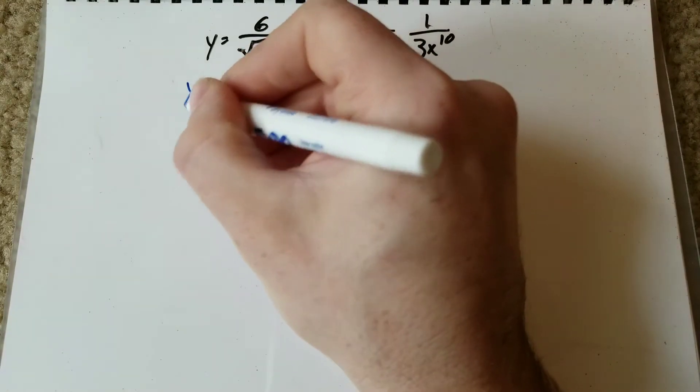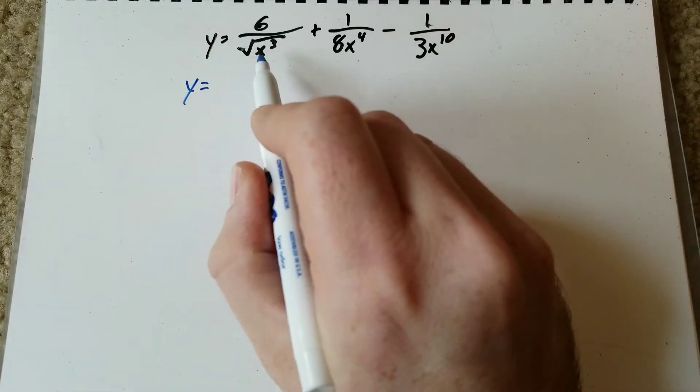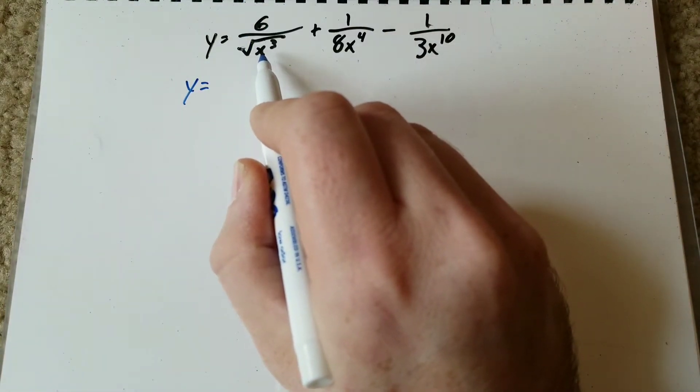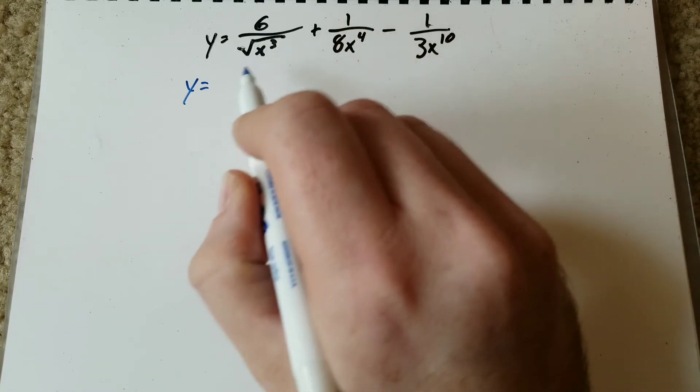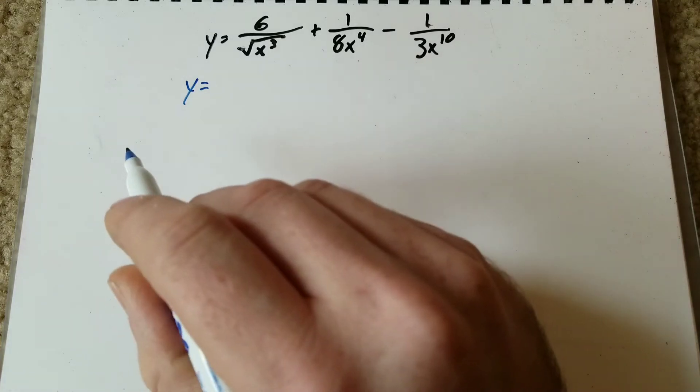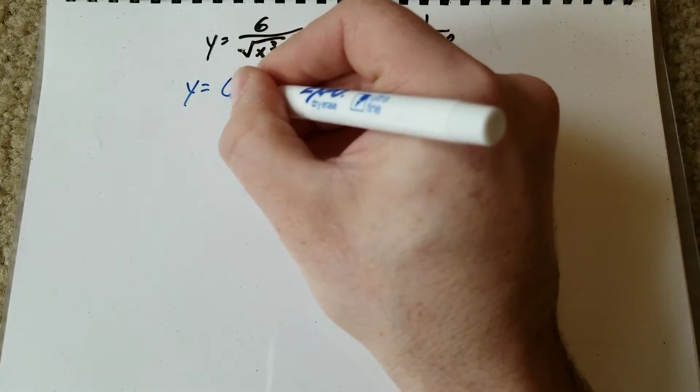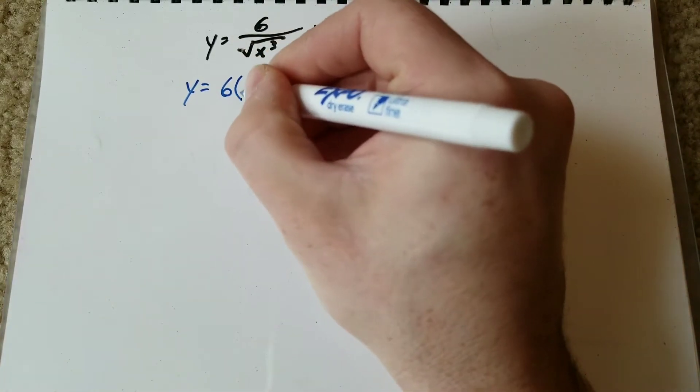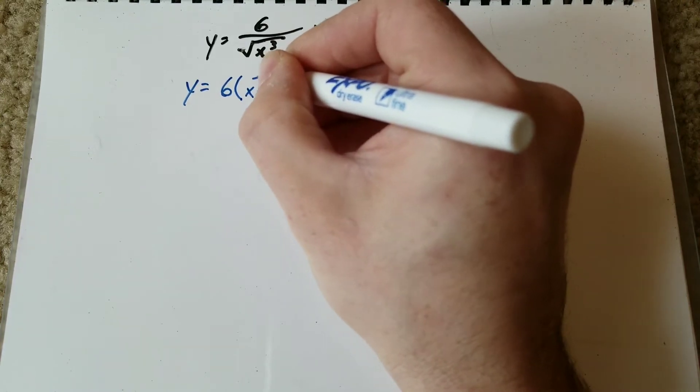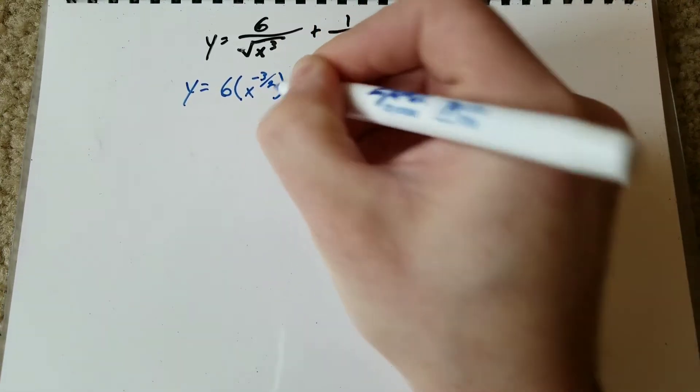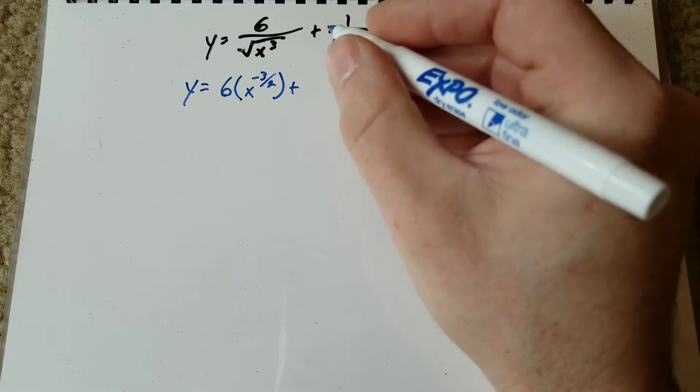So we'll rewrite y as, okay, this is going to become three halves, and then we want to move it up to the top because we don't want this to be a fraction as we're doing this. So we're going to have six times x to the negative three halves plus we've got